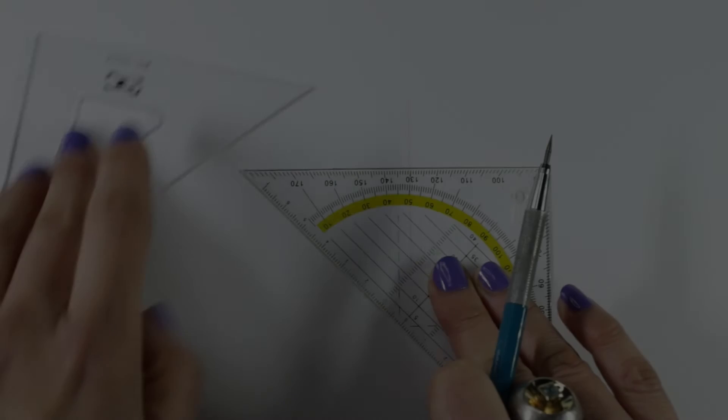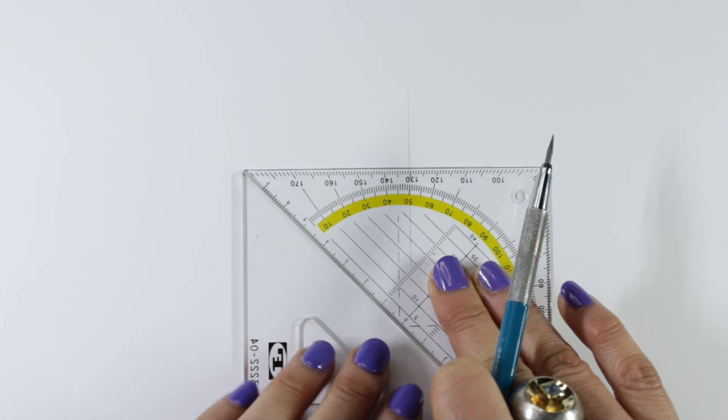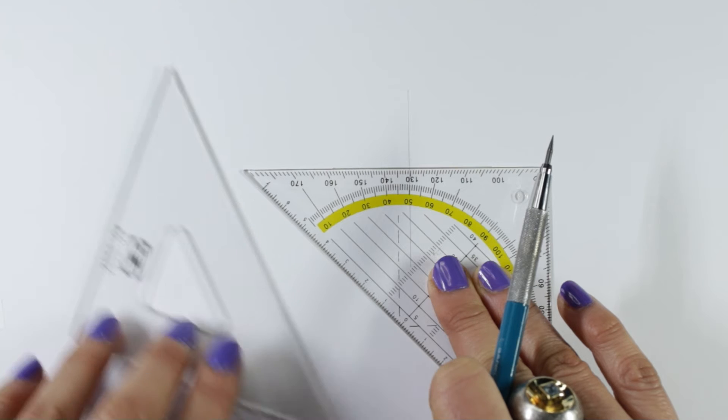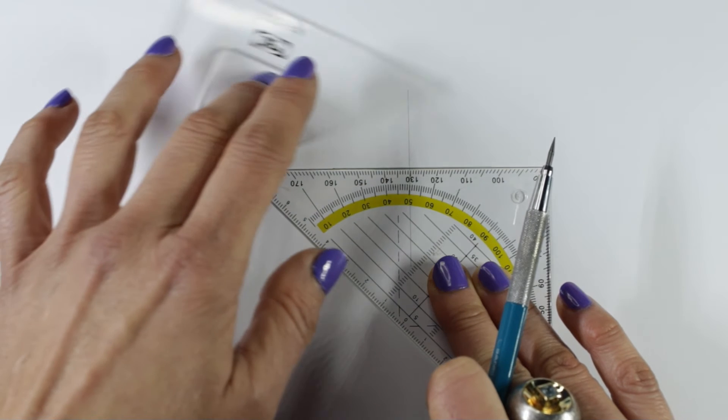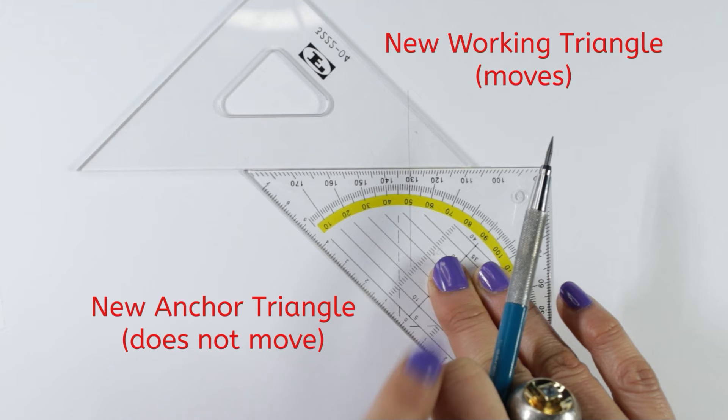I just show it to you again. First, in the starting position, rotate the lower, or anchor triangle, on top of the working triangle. The former working triangle is now the anchor triangle. The top triangle, or former anchor triangle, is the one now that moves.